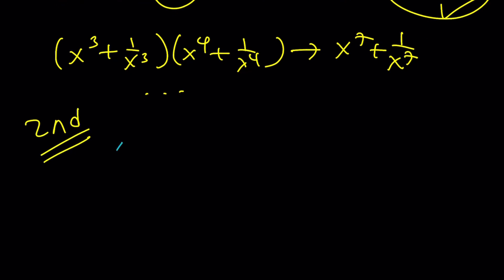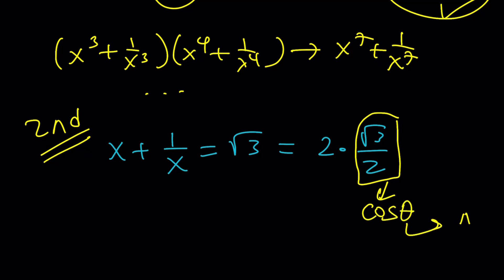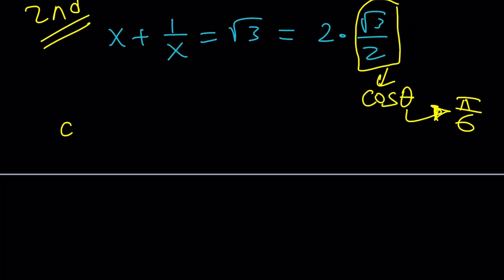For my second method, I want to use a very special formula. Square root of 3 is not an ordinary number — it's actually 2 times square root of 3 over 2. The square root of 3 over 2 should be familiar to you, so let's call that cosine theta. In this case, theta happens to be pi over 6. Cosine theta is root 3 over 2, and pi over 6 is not the only one, but we can use that.